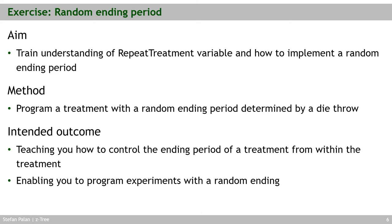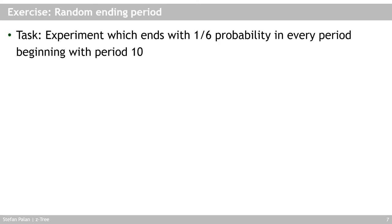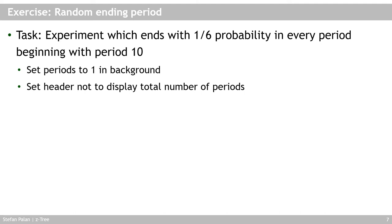After completing this exercise, you will know how to control the ending period of a treatment from within the treatment and how to program experiments with a random ending period — something often used to simulate decision environments with infinitely repeated decisions. The task is to program an experiment that runs for nine periods and then, starting from period ten, ends with a probability of one sixth. Set the periods in the background to one, the paying periods to one, and set the header box to not display the total number of periods.